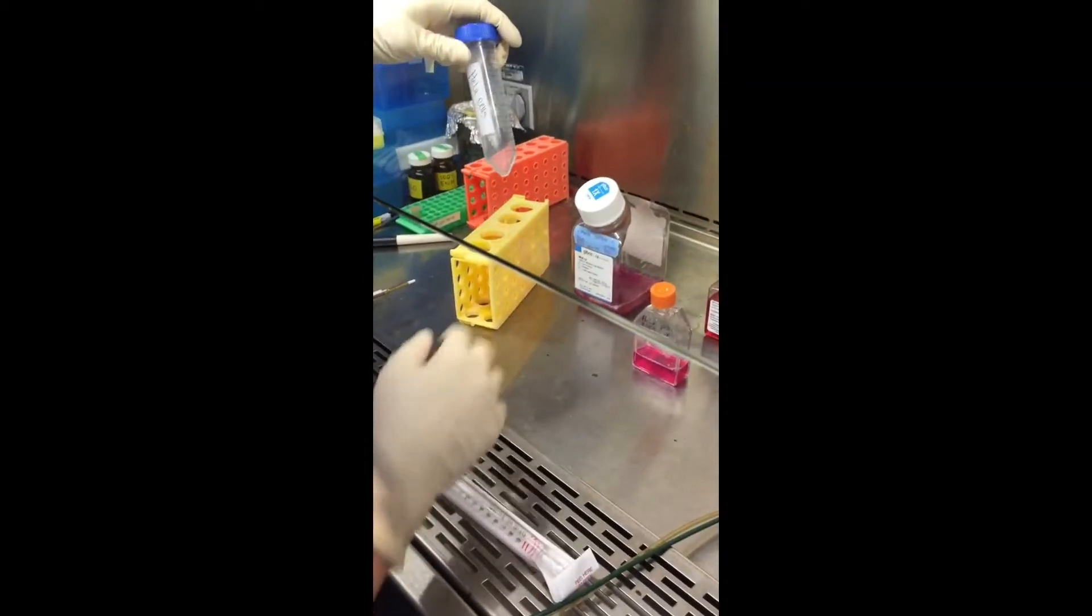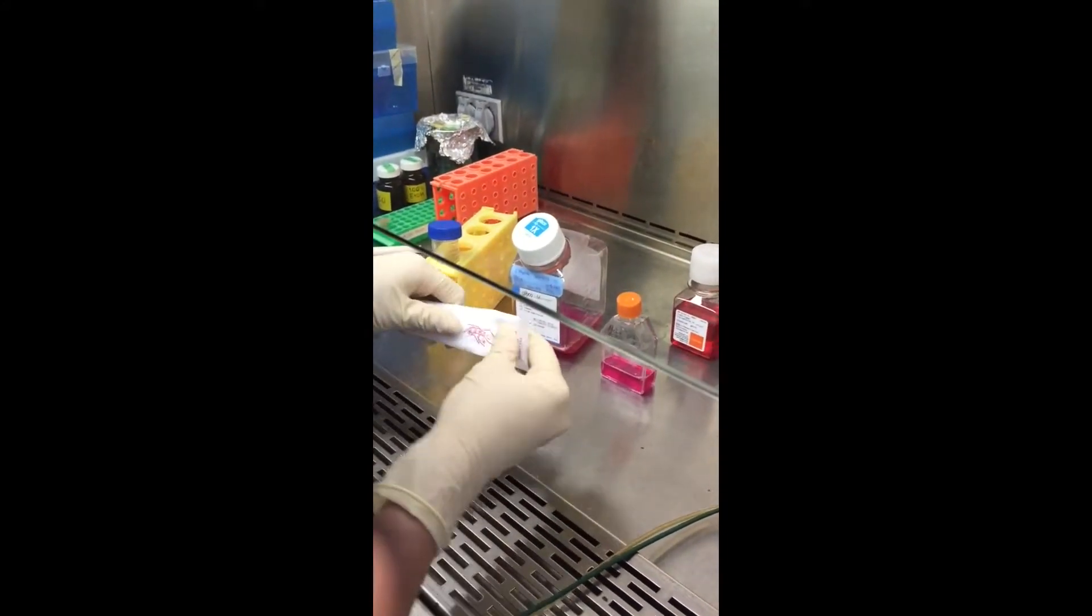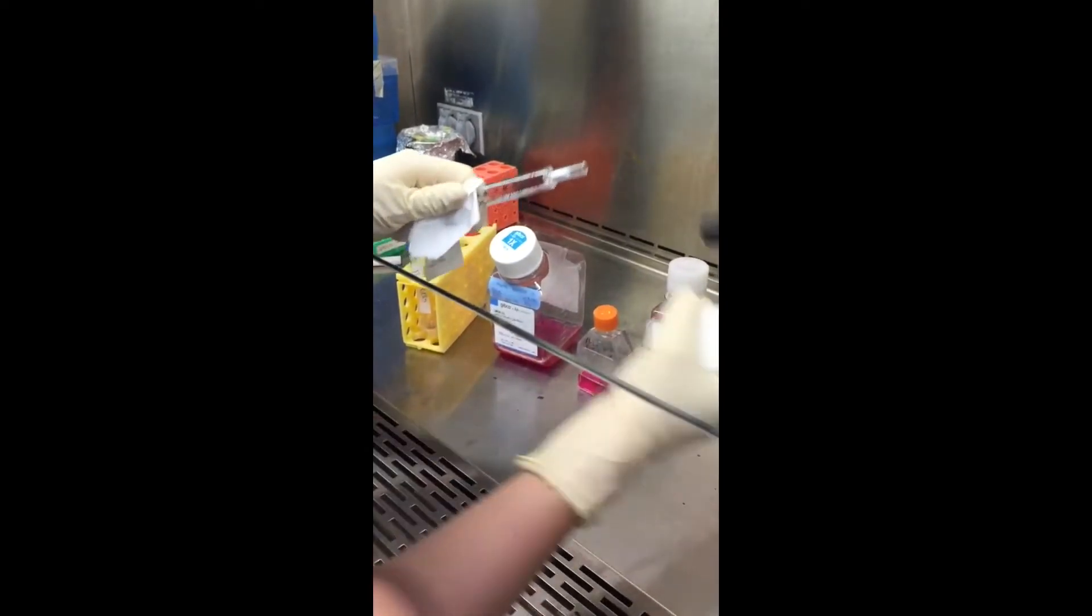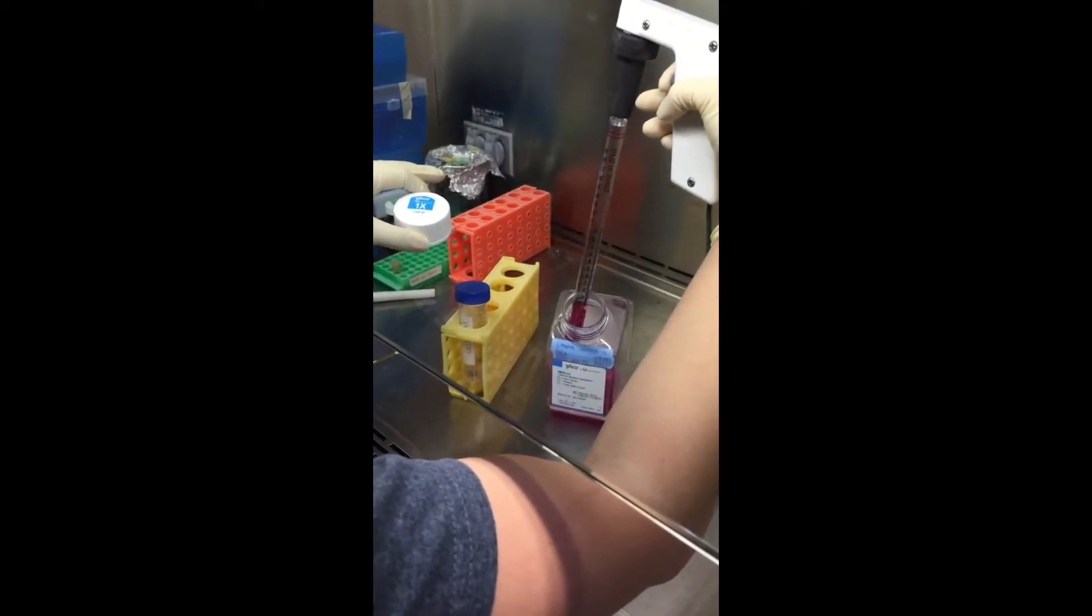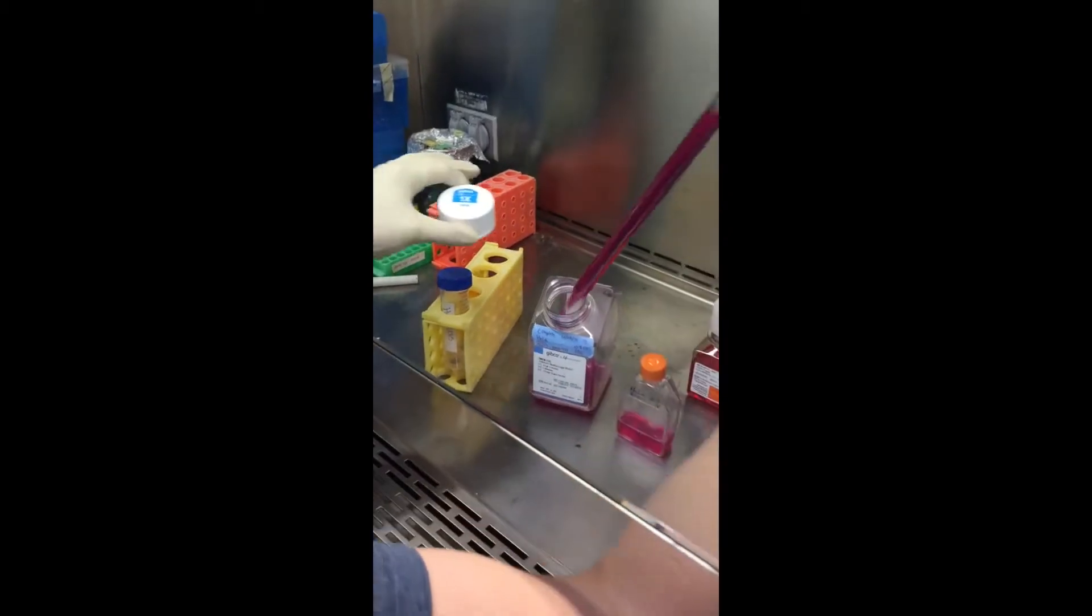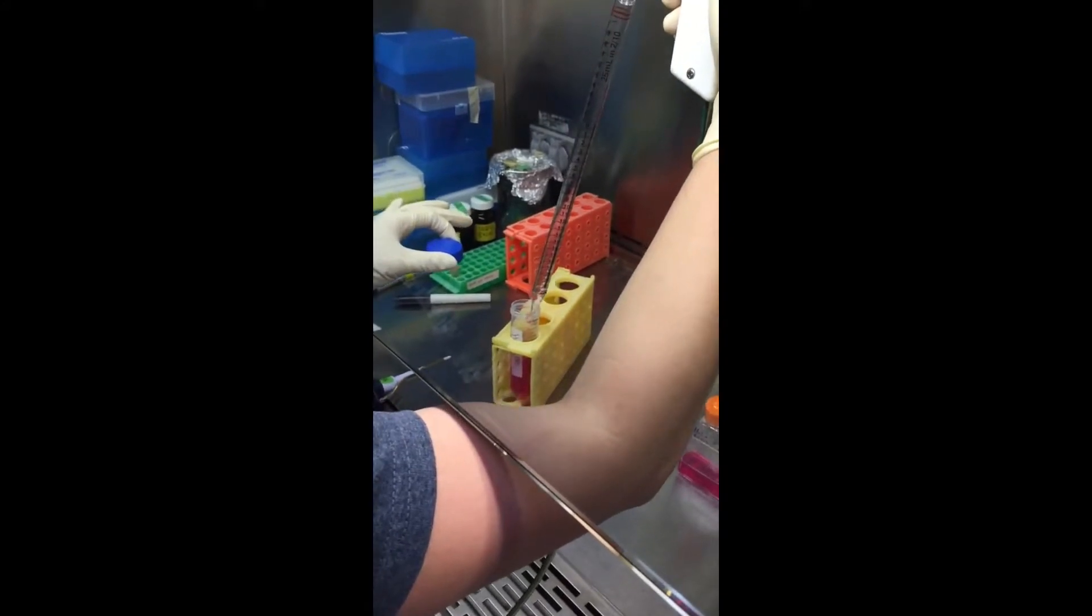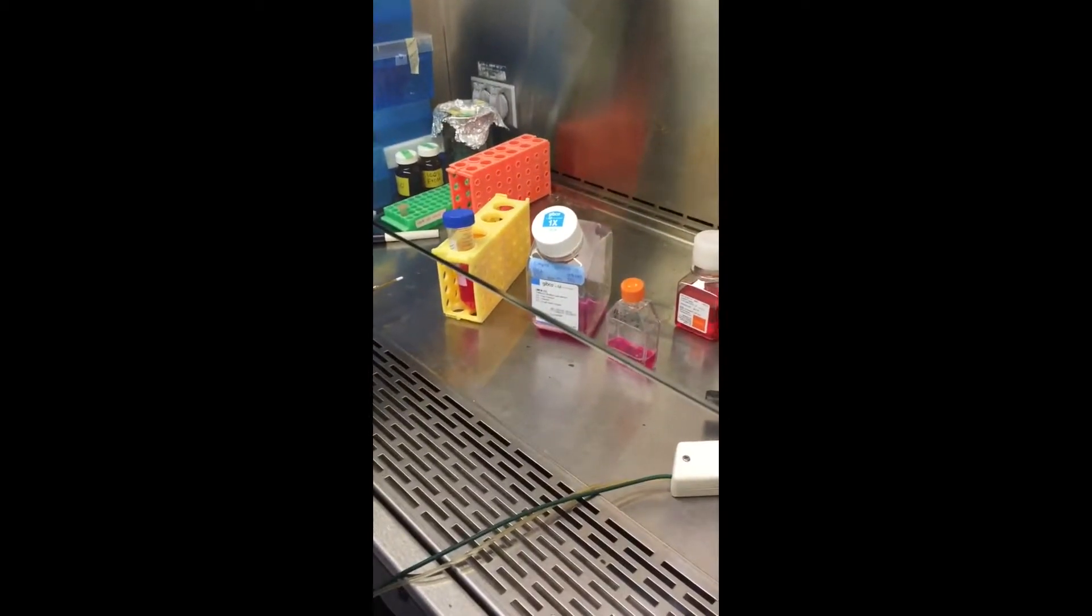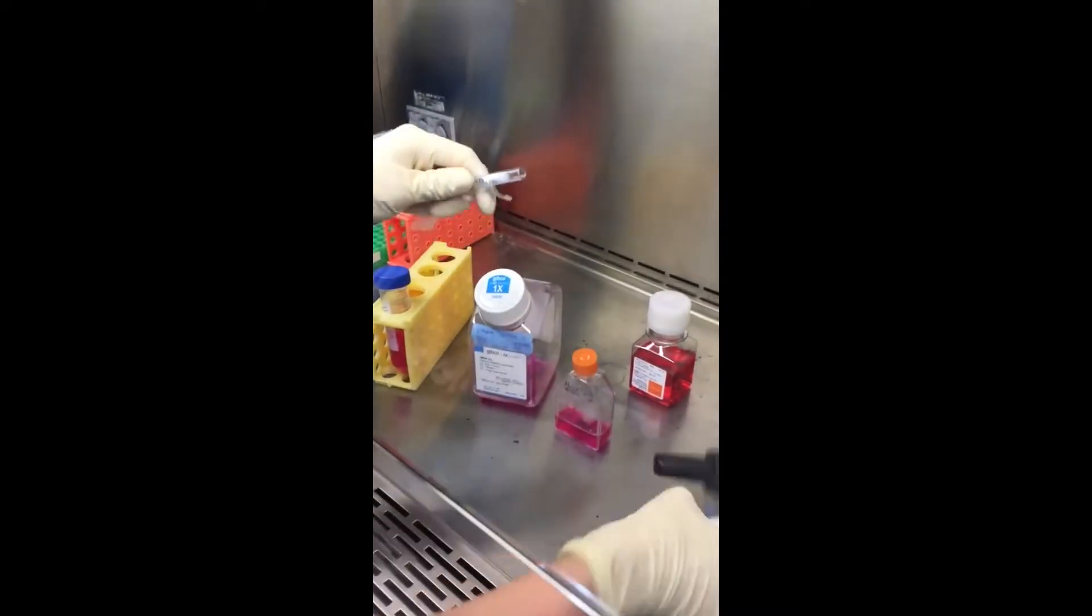Okay, so I'm going to put my cells and media into this centrifuge tube. I'm going to put the media in first because you always want to give the cells something to go into. So it was 28.8 milliliters of media, and then 3.7 milliliters from my cells.